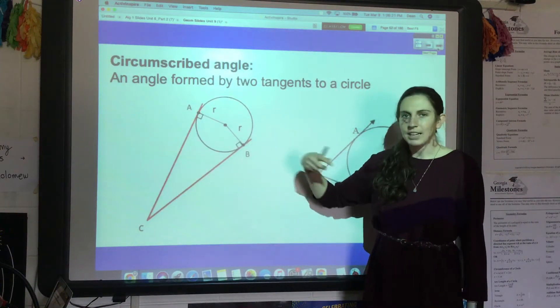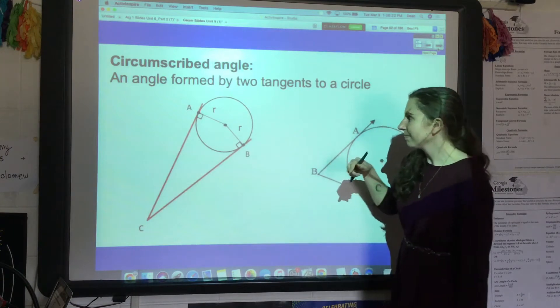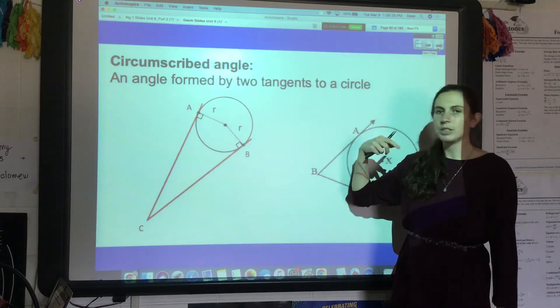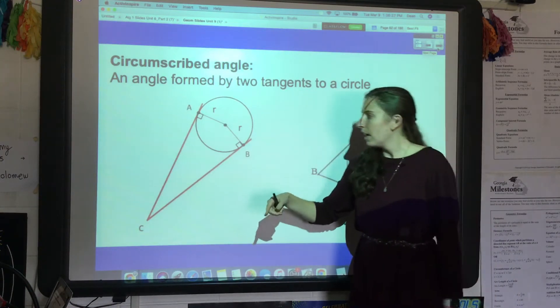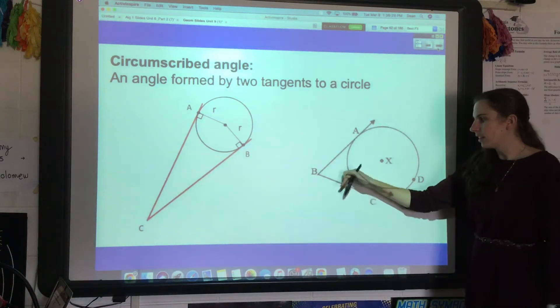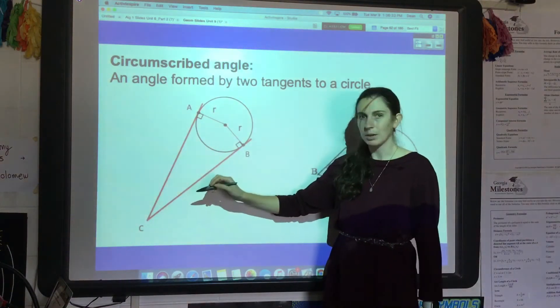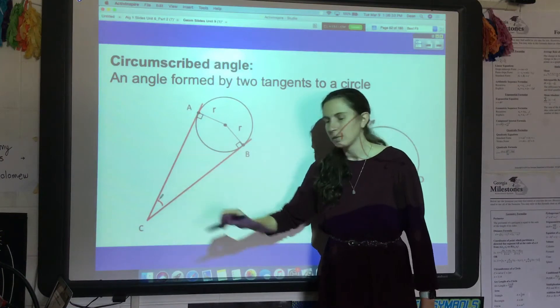Looks like an ice cream cone, which is kind of fun. It's an angle formed by two tangent lines. So this would be a circumscribed angle, and this is a circumscribed angle.